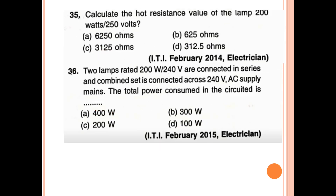35th question: Calculate the hot resistance value of a lamp rated 200 watt, 250 volt. Using the formula, the answer is 312.5 ohm.